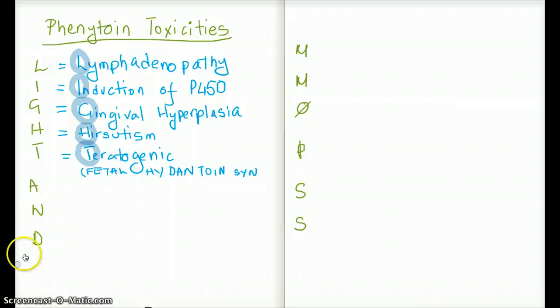Moving on to AND. AND stands for ataxia, nystagmus, and diplopia. All those symptoms that have to do with balance. Ataxia, nystagmus, and diplopia.